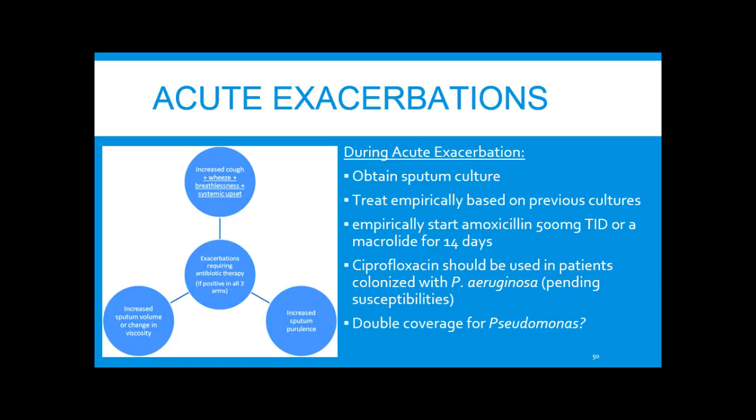In an acute exacerbation, symptoms may not change much, so what's looked for are three things: increased sputum volume, increased sputum purulence, and increased cough, wheezing, hypoxia, or breathlessness. If all three components are present, it's considered an acute exacerbation. Per the British Thoracic Society, the first step is to obtain a sputum culture and treat empirically — the recommended antibiotic is amoxicillin 500 mg three times weekly or a macrolide, unless previous cultures are available to guide therapy. Cipro should be used if patients are colonized with susceptible Pseudomonas; if resistant, double coverage and IV antibiotics may be used.